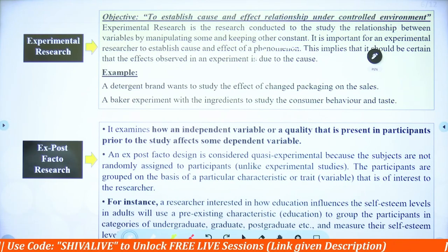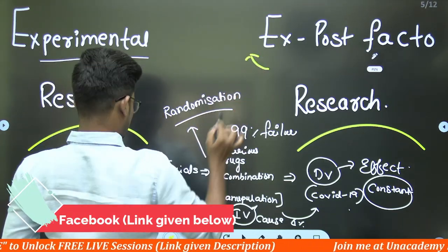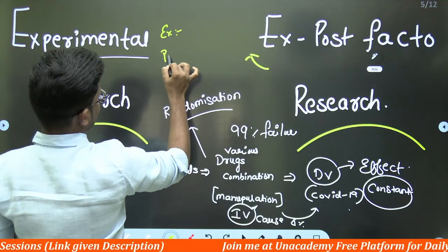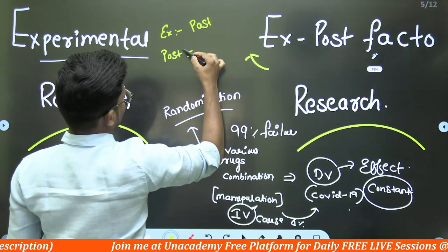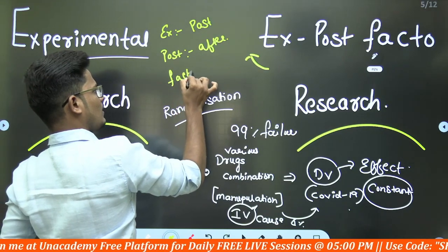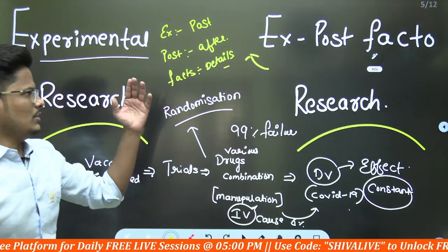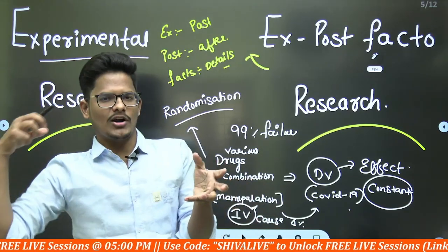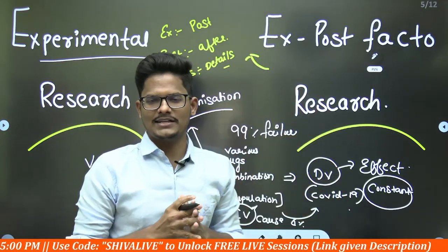Now let's look at ex-post facto research. 'X' means past event, and 'post' means after. So ex-post facto means after the happening of some event — studying what happened, the details and facts of the case. After an event has occurred, how did it happen and what were the reasons for it? This is essentially a post-mortem analysis, which comes under ex-post facto research.